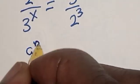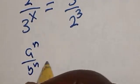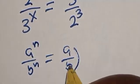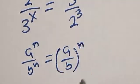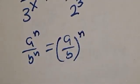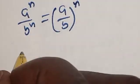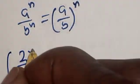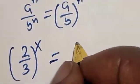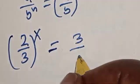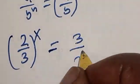Then, if you have A raised to the power N divided by B raised to the power N, this is equal to A over B raised to the power N. Now, the left-hand side becomes 2 divided by 3, raised to the power s, is equal to 3 over 2 raised to the power 3.